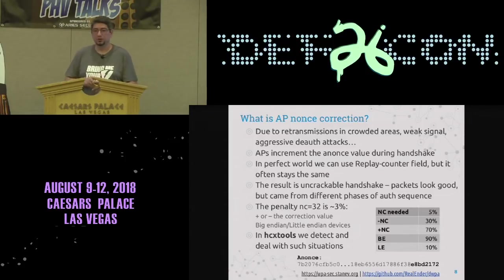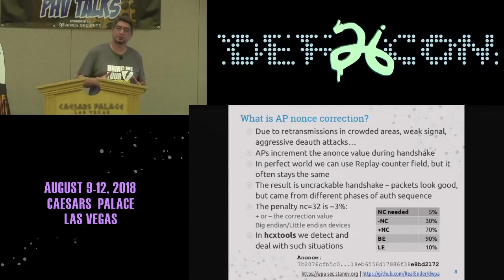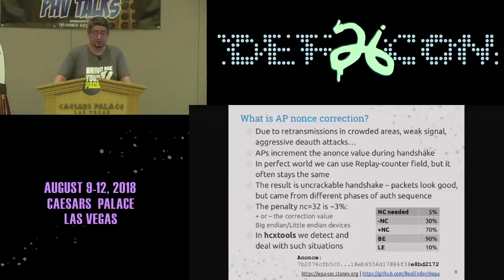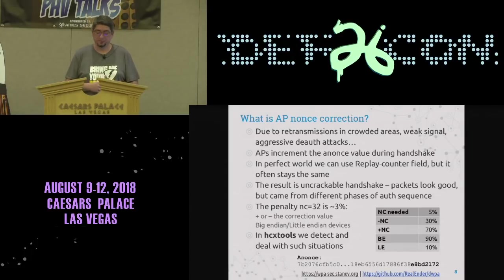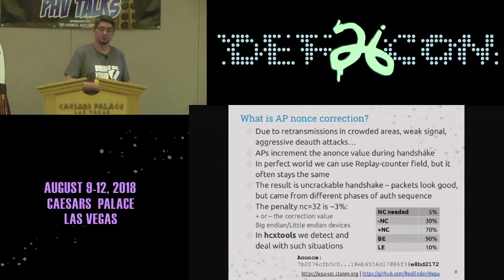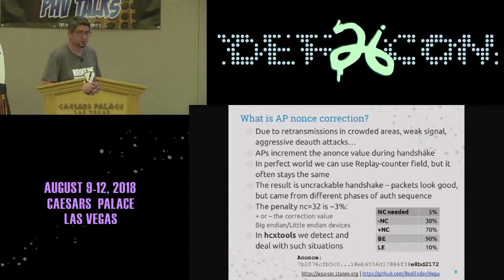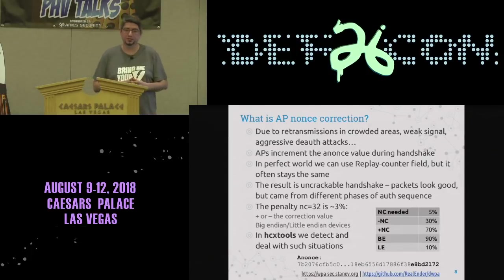About nonce correction: we use it because we don't want to spend years of GPU power cracking something that can be corrected. We can also rely on the replay counter field to determine what nonce correction to use, but this is not ideal because often APs keep the same replay counter. Around 5% of all half-million handshakes needed nonce correction.